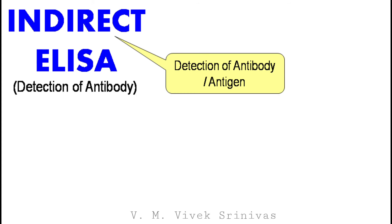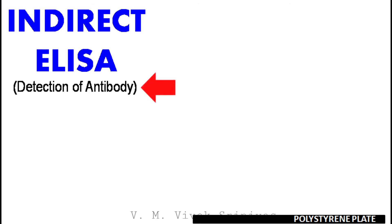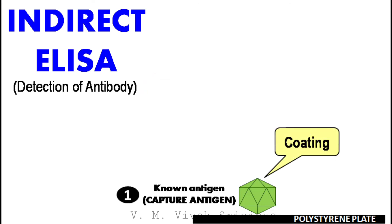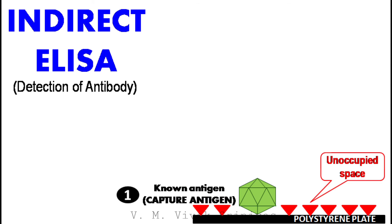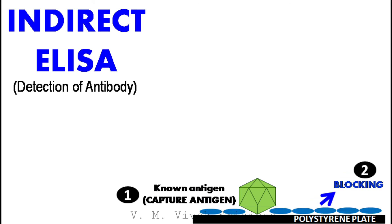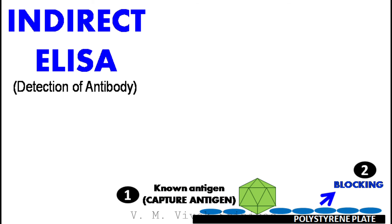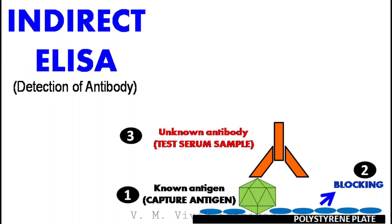Now we will see about antibody detection by indirect ELISA. In indirect ELISA, the first step is coating of known specific antigen, which are considered as capture antigen, since they are captured to the polystyrene surface. Following coating, incubation and washing, the second step is blocking, where the unoccupied spaces are blocked by using blocking buffer as described earlier. After blocking, incubation and washing, test serum samples are added. If the sample is positive for particular antibodies, it interacts with the known specific antigen.